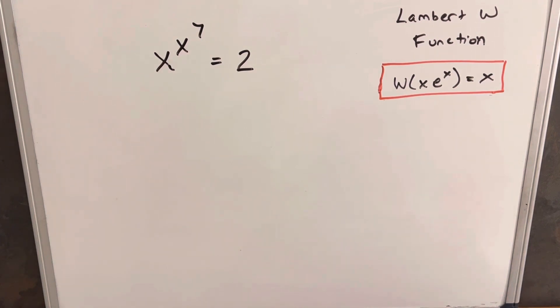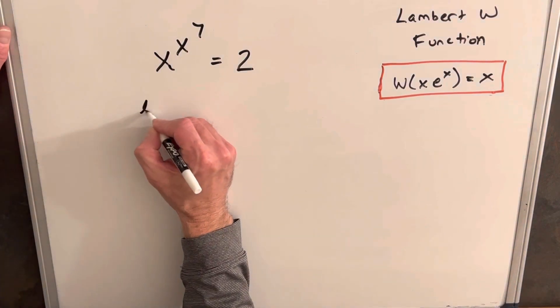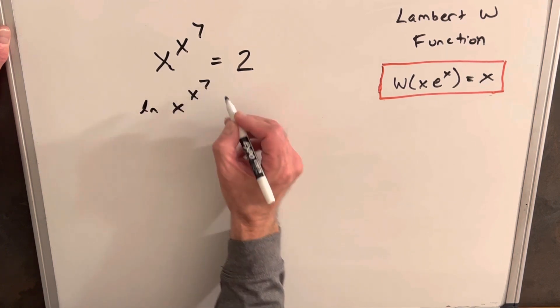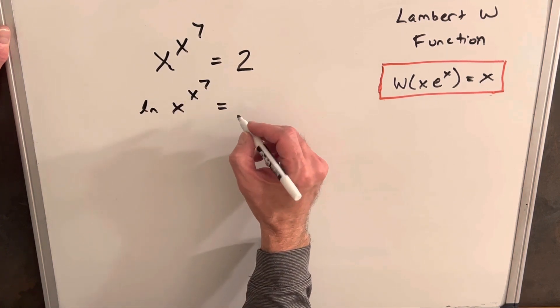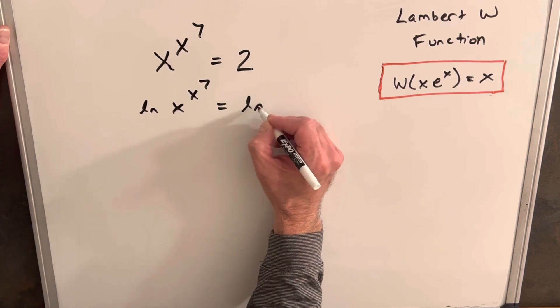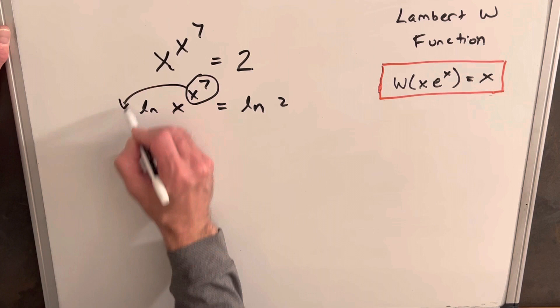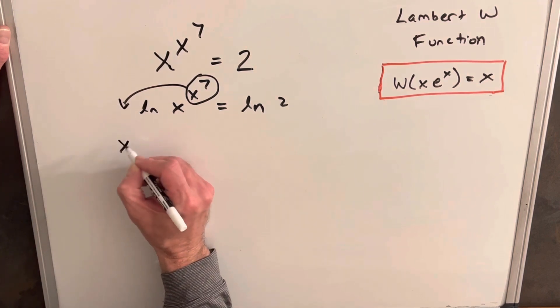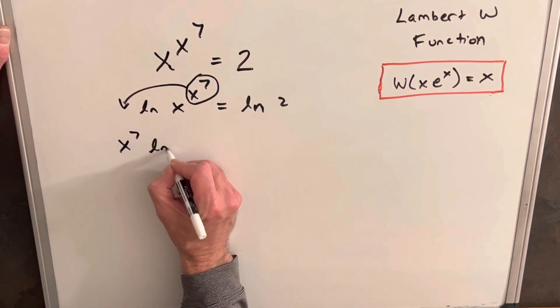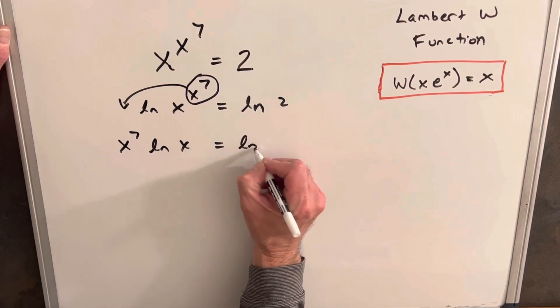So to start with, what I want to do is we'll take the natural log on both sides. So we'll have natural log of x to the x to the 7th equals natural log of 2. And then we'll take our exponent and bring it up front. So we'll have x to the 7th times ln x equals ln 2.